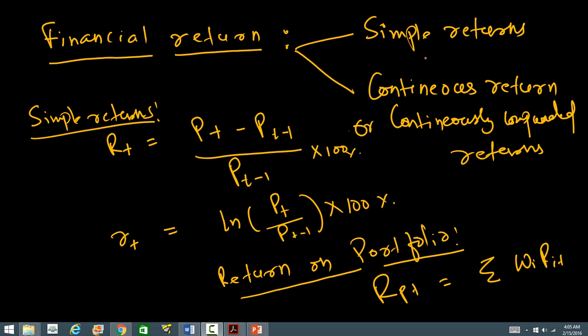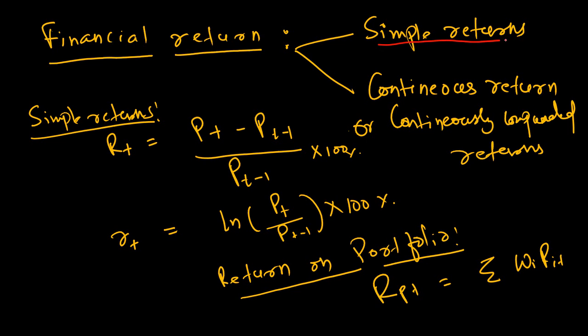Basically, the return that you receive by holding a stock over a period of time is known as financial return, and there is a mathematical way of computing financial returns. There are two ways of computing returns: one is a simple return and the other one is a continuous return or continuously compounded returns.